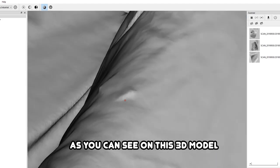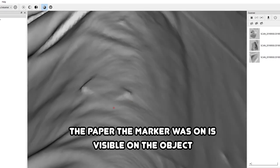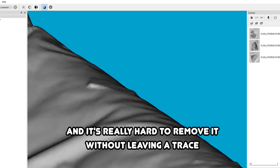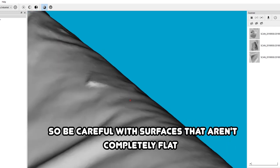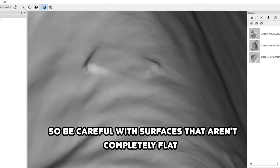As you can see on this 3D model, the paper the marker was on is seen in the object and it's really hard to remove it, so be careful with surfaces that aren't completely flat.